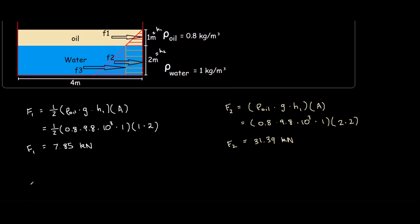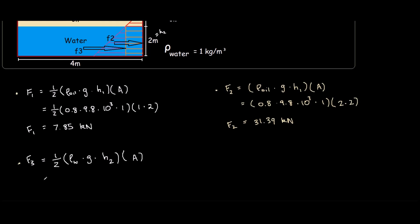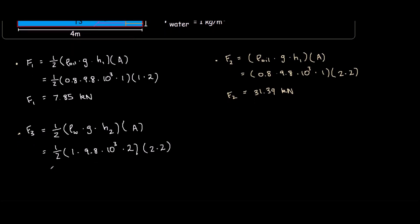So for the third force, F3, it's a triangular section again from the water. It would be ρ_water times g times, this time is the second height, because it's the water's depth. And this would be on a 2 by 2 section of the tank, 2 meters depth and 2 meters into the page. So we write this out, it would be half ρ_water, which was 1 kg per meter cubed, so 1 times 9.8 times 10 to the 3 for the Newtons, times 2 meters for the H2. And the area is 2 by 2. So this comes out to be 39.24 kilonewtons.